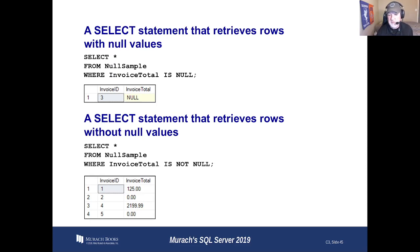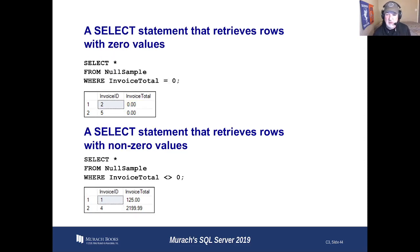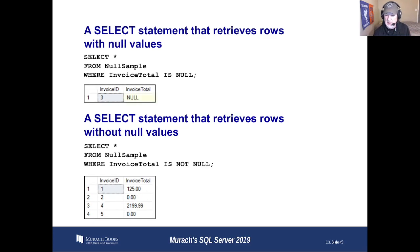The query on the bottom is looking for all the invoice totals that are not null. That's going to give us all of our zeros, all of our non-zeros, but no nulls — notice which one's missing. Let's go back a slide: searching for zero, we get two and five. Searching for invoice total not equal to zero, we get one and four. Search for null, we get three. Not null gives us everything but three.